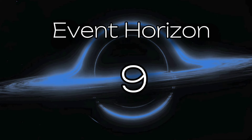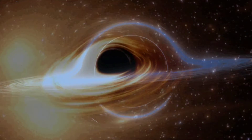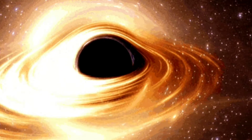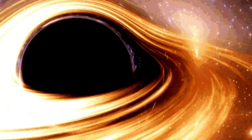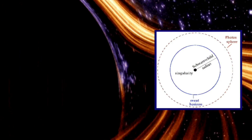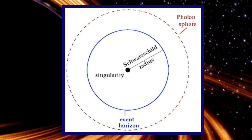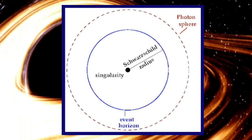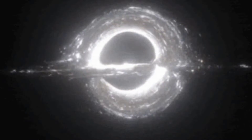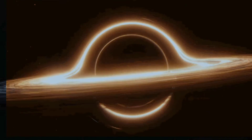9. Event Horizon. A consequence of relativity and Schwarzschild's solution is the concept of the event horizon. An extension of the Schwarzschild radius, the event horizon marks the spherical boundary beyond which nothing, not even light, can escape the gravitational pull of a black hole. It represents the point of no return for any object or information falling into the black hole, a threshold where the laws of physics as we understand them cease to apply.